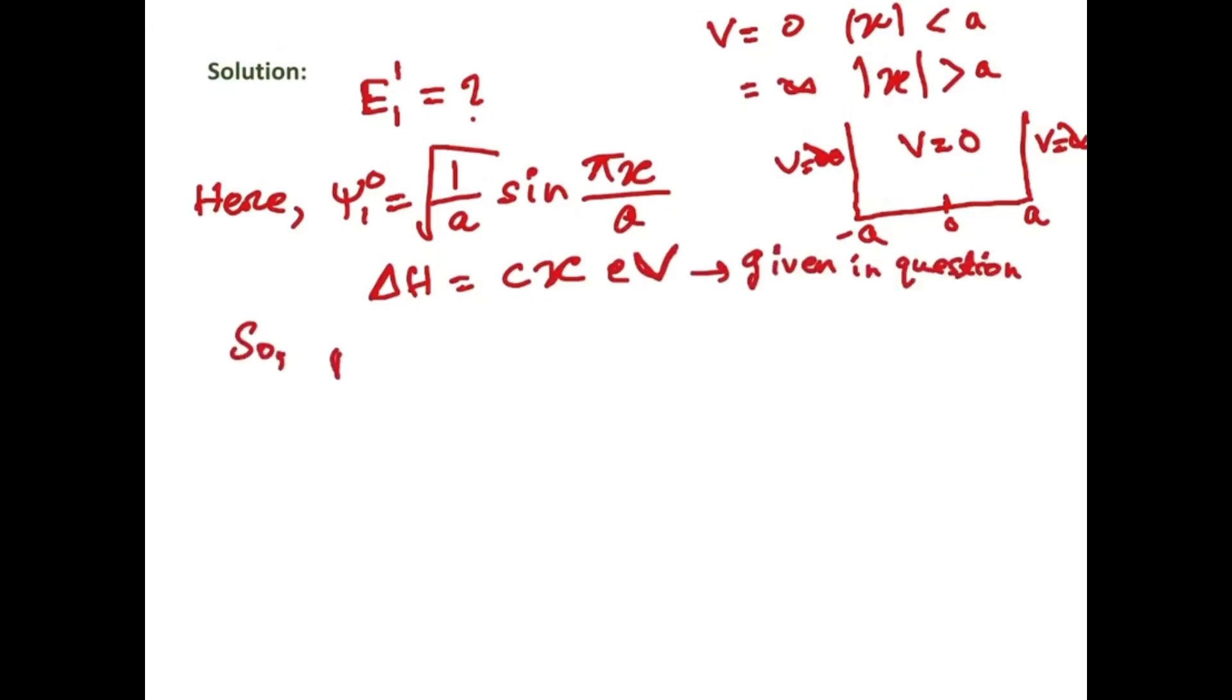So our first order correction term to the first excited state will be integration minus a to a of 1 by root a sin pi x by a into cx into 1 by root a sin pi x by a dx.